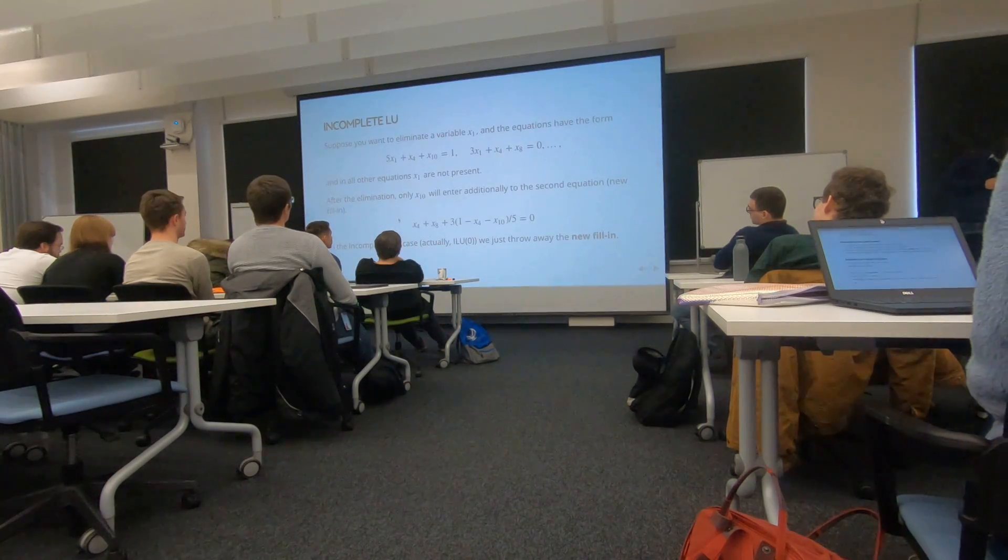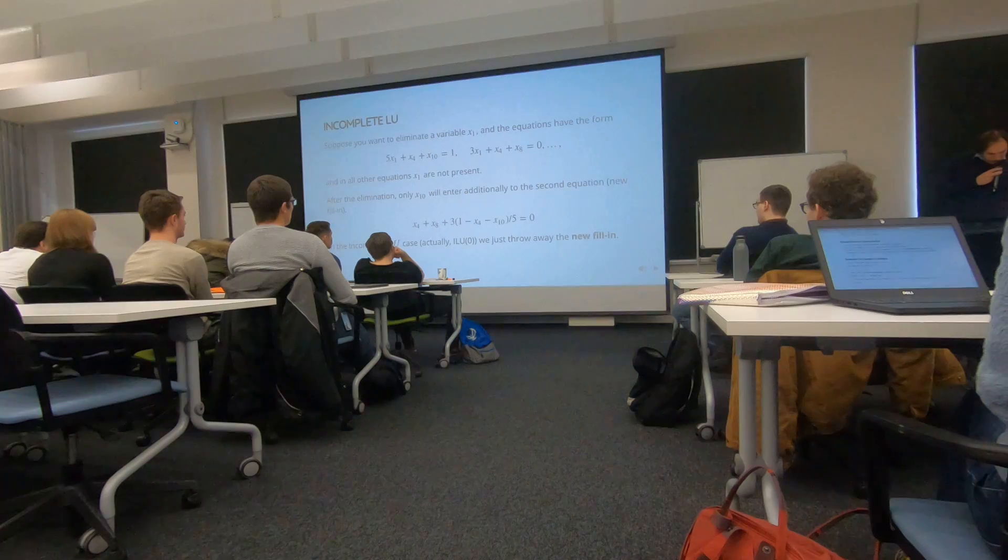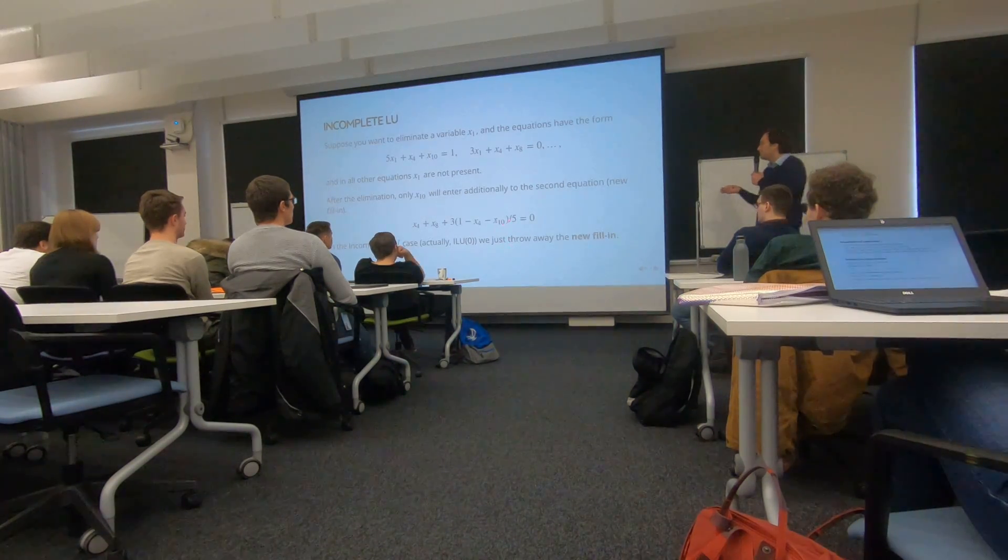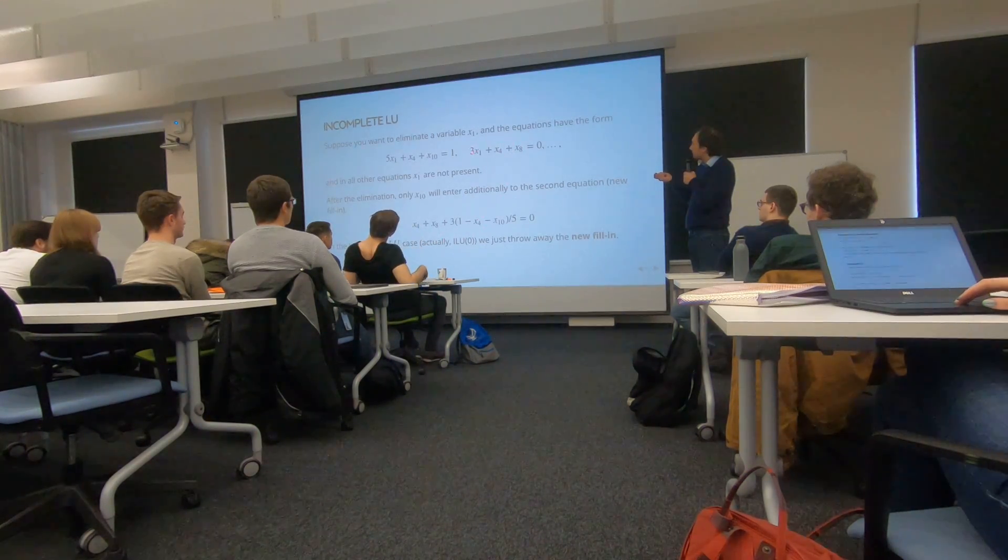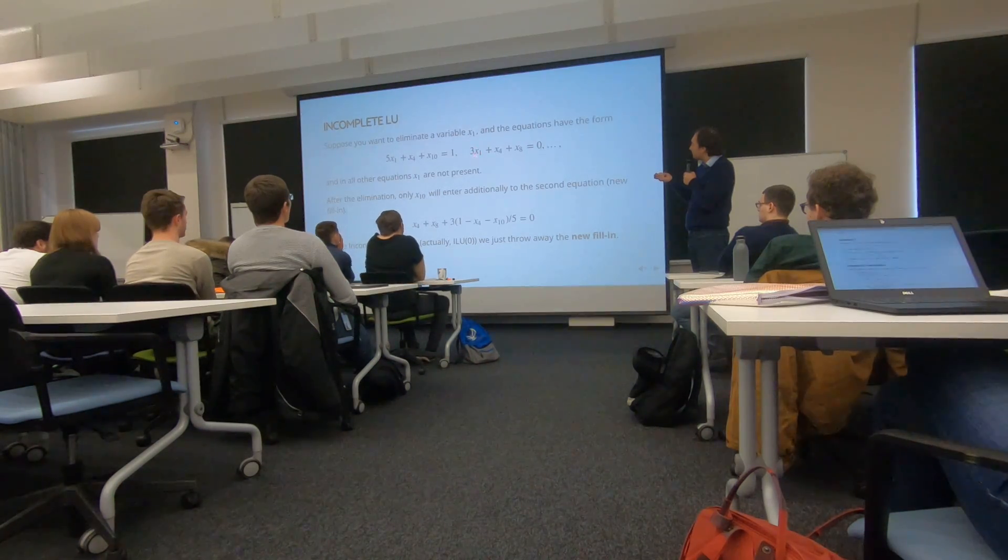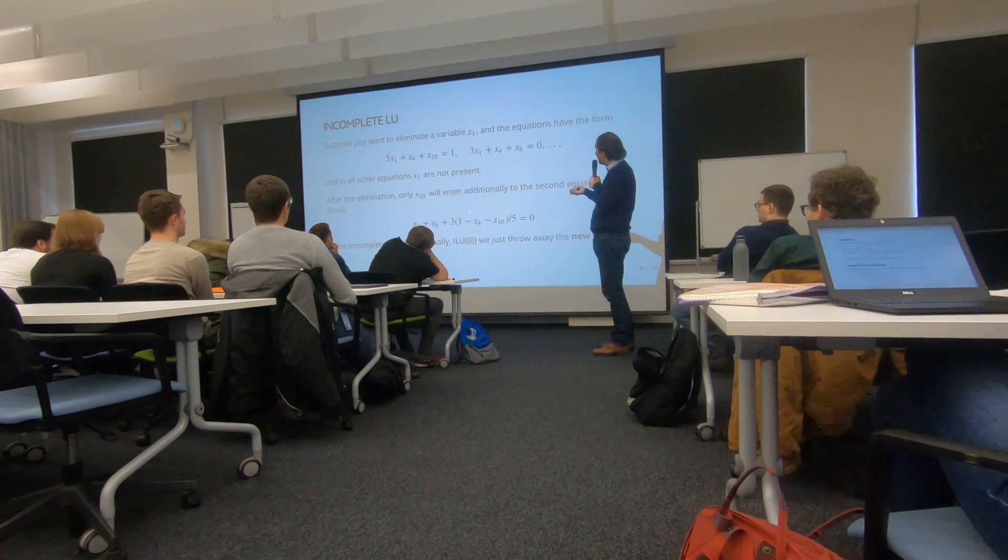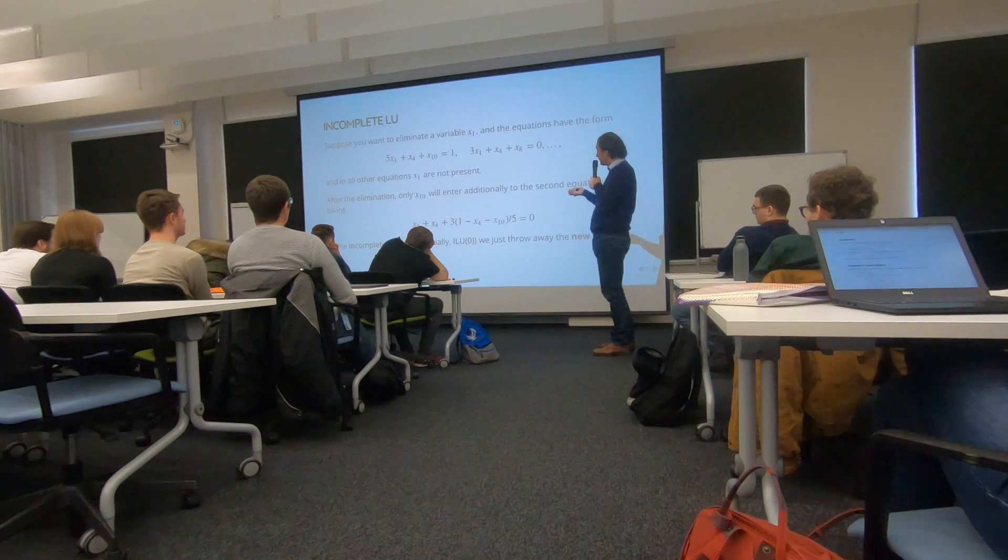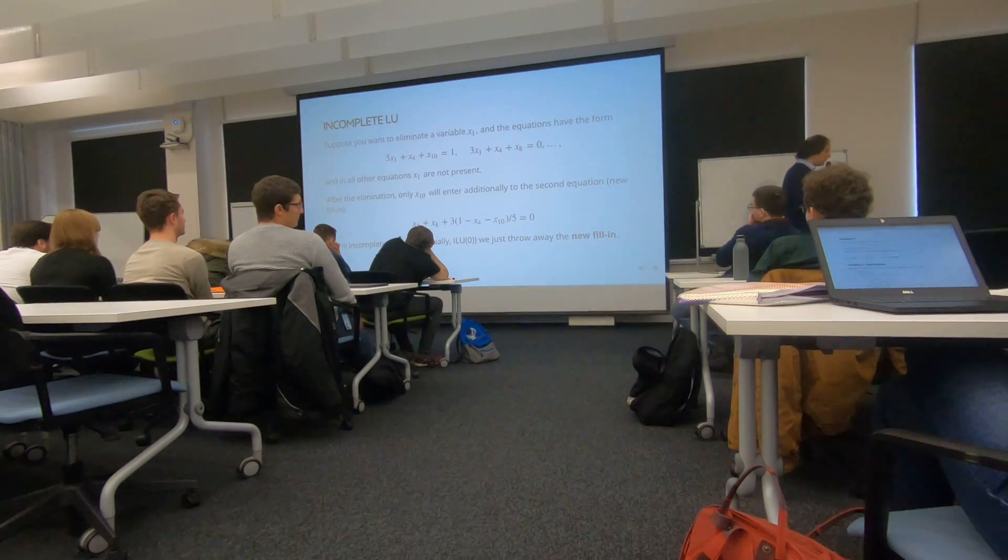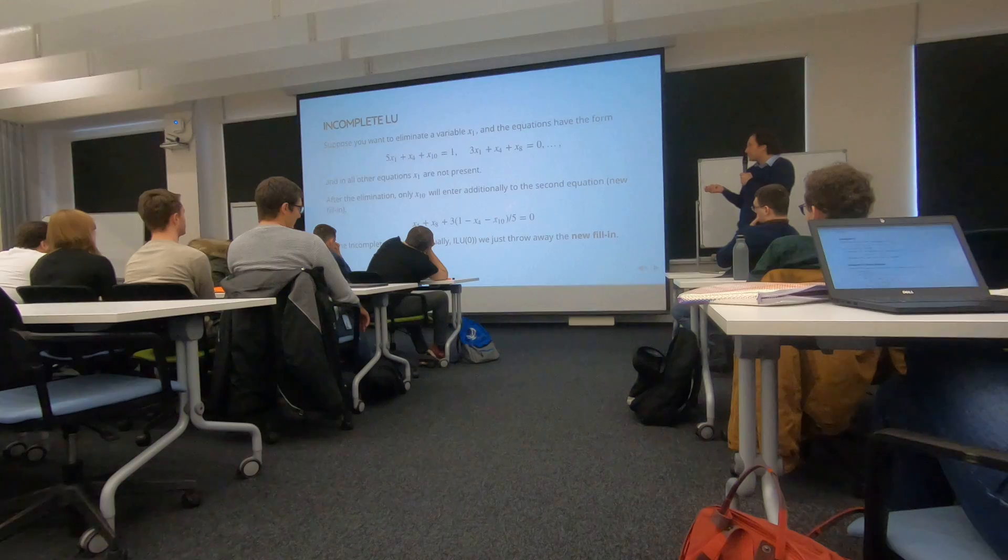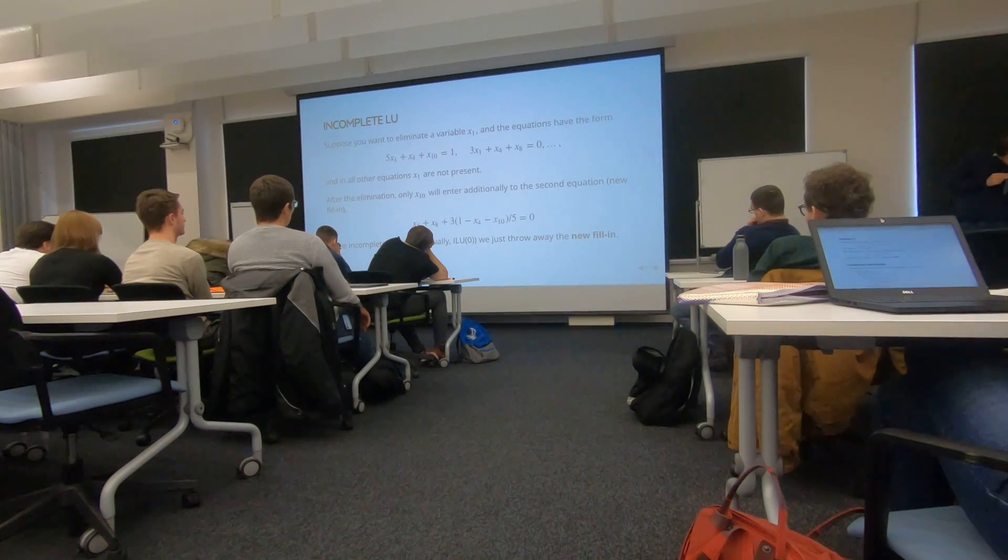Yeah, this is an attempt to illustrate. So if you eliminate a variable from two equations, then we have this new fill-in. And we might just say, okay, let's assume that this three over five is zero. So this was our original equation. It had only, in this equation it had, so what we have to eliminate, we're eliminating x_1, right? And we have x_10 that appears. So we have a fill-in. But we might say, and that's what is called incomplete LU of zero. We say all the new fill-ins are not allowed. So we just remove this variable. And in terms of the matrix, we just put a zero instead of what should be there.